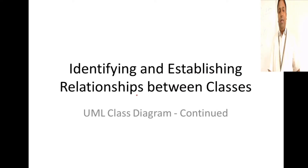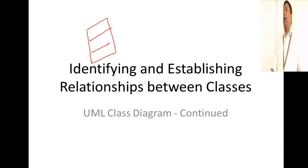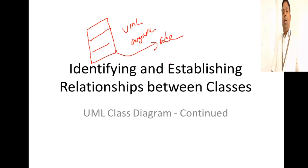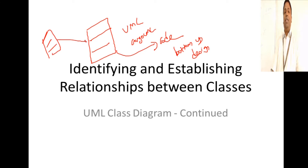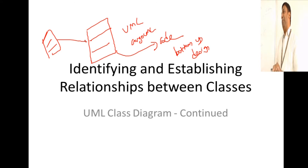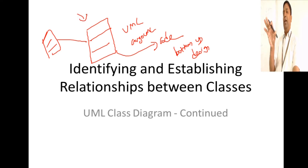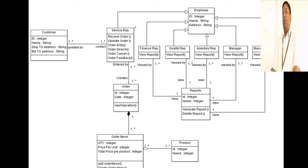Now we'll go with identifying and establishing relationships between classes. In our previous presentation, we established a class in ArgoUML and converted it to code. In object-oriented design, the major concept is bottom-up design: you identify all the classes and then establish relationships between them, because classes should be related for it to become a system. First, identify all classes and plot them in ArgoUML; next, identify the relationships between those classes.